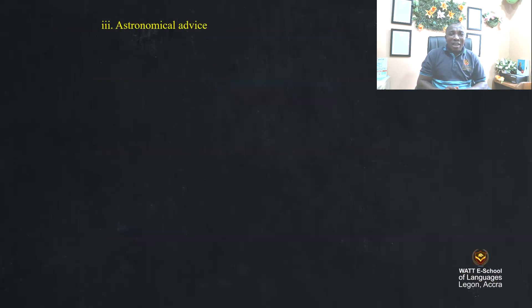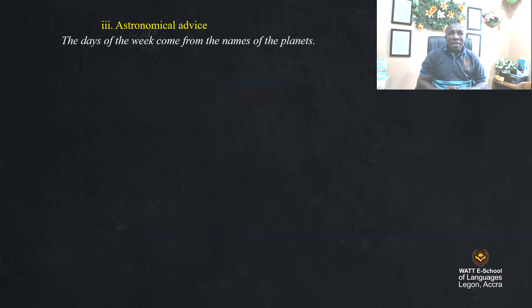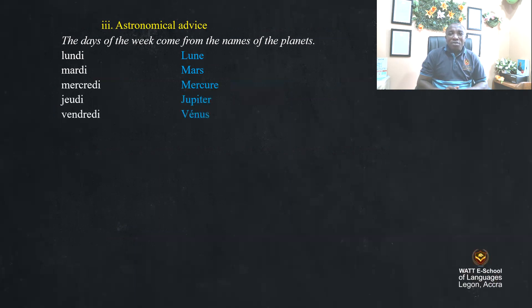Now let's have some astronomical advice. When I say astronomical advice, I mean a comparison of the names of the week and the planets. The days of the week come from the names of the planets. Today I'm going to teach you: lundi from lune, mardi from Mars, mercredi from Mercury, jeudi from Jupiter, vendredi from Venus, samedi from Saturn, dimanche from soleil.